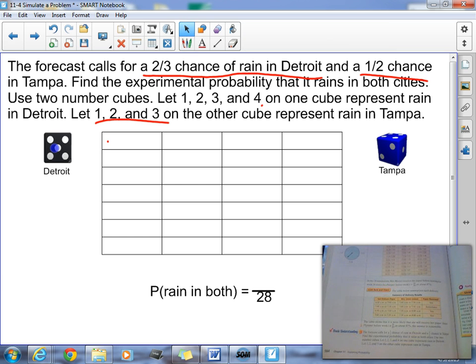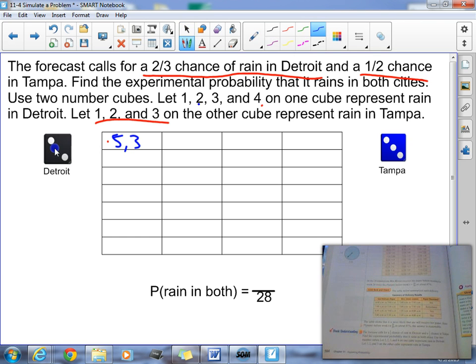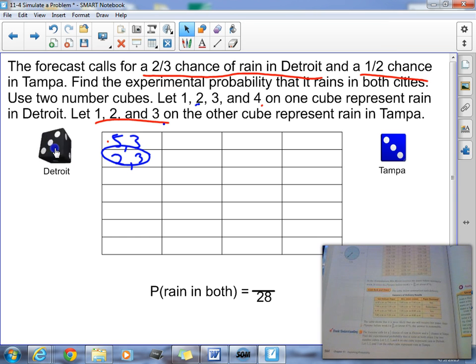So for the first time, we'll go ahead and roll this. Roll both those dice. So I have a five, and I have a three. Well, there is no rain in Detroit on this day. Next time. So there's two, and this is a three. Look at that. There is rain because that's a two and three. So we're good on that day. So let's keep going.